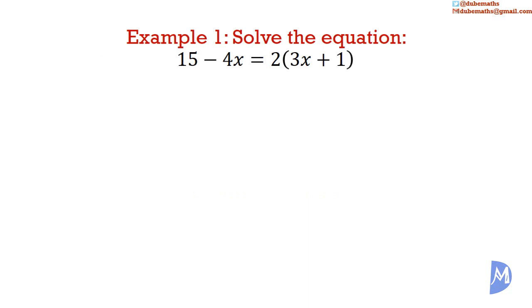Example 1. Solve the equation 15 minus 4x is equal to 2 multiplied by 3x plus 1. To simplify, at this point, we want to remove the 2. We can divide both sides by 2, or we can expand the brackets. If we divide by 2, we get a fraction on the left-hand side, and this is less desirable than multiplying.